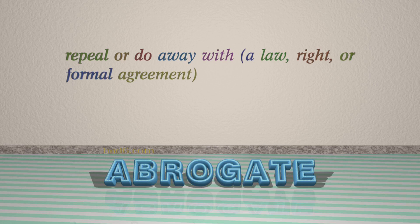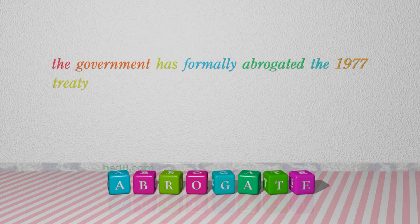Number 5: Abrogate. Which means: repeal or do away with a law, right, or formal agreement. For example: The government has formally abrogated the 1977 treaty.